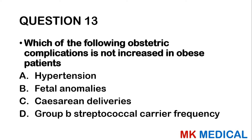Question 45: Clue cells are seen in: A — bacterial vaginosis. B — candidiasis. C — trichomoniasis. D — gonorrhea. E — chlamydial infection. Clue cells are epithelial cells covered in coccobacilli and are seen in bacterial vaginosis. The answer is A.